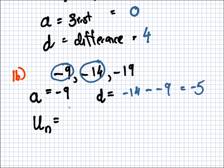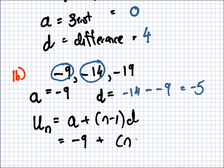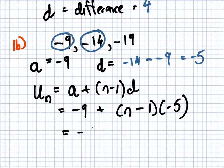Does anyone remember the formula for U_N? The A is minus 9. The N you don't know. And the D is minus 5. Open the brackets. Simplify. So, that's minus 9 minus 5N. Minus plus 5. Plus 5.